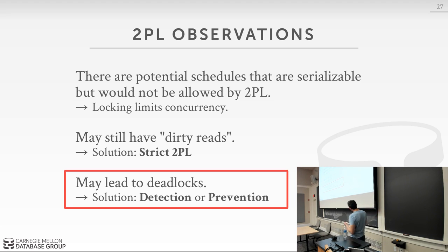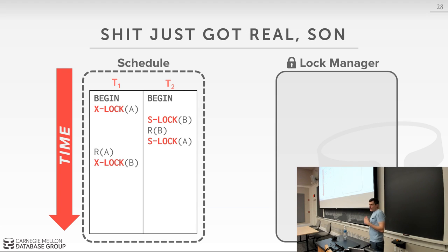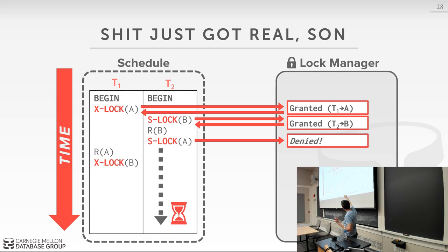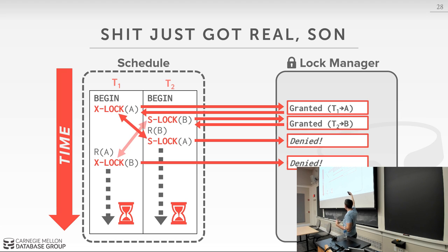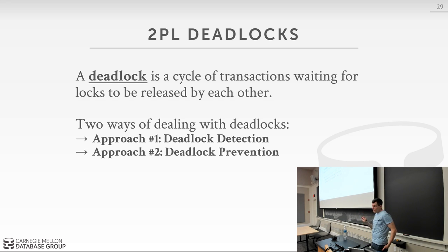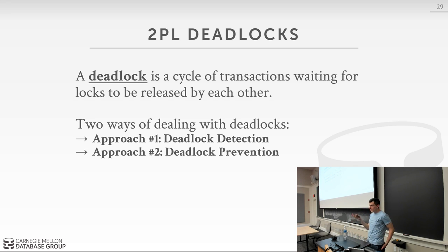The other problem we have to deal with is deadlocks. Strict 2PL handles cascading aborts, but we still have deadlocks in both strict and non-strict 2PL. A simple example: T1 holds a lock on A and wants B; T2 holds a lock on B and wants A — classic deadlock. Abstractly, this is a cycle in the graph of transactions waiting for other transactions. We need a protocol to either detect cycles and break them by killing a transaction, or prevent deadlocks from occurring in the first place — which is what we did with latching by always acquiring in one direction.